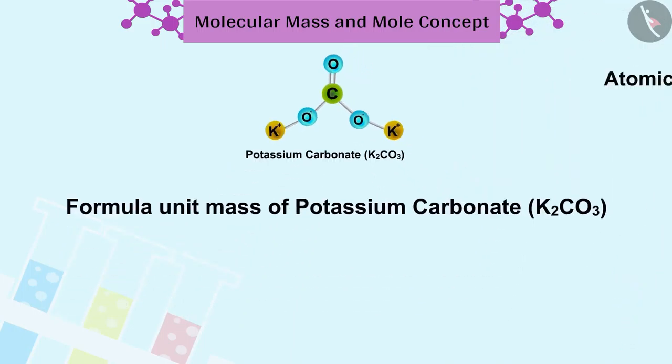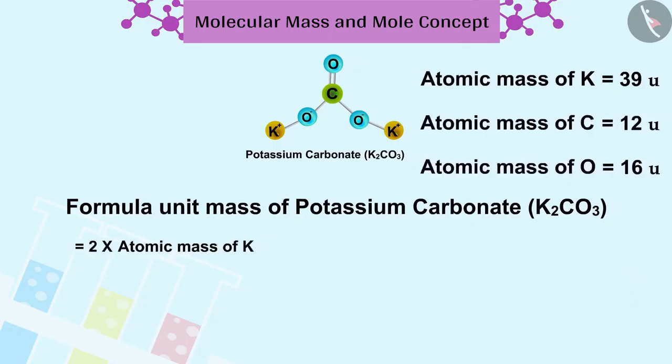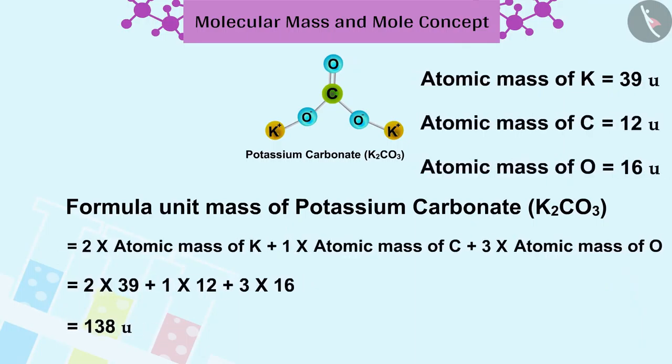Well done friends! You have found the perfect answer. The formula unit mass of potassium carbonate is 138U.